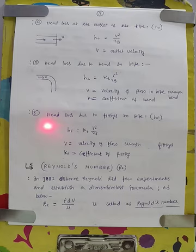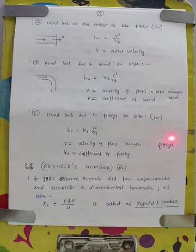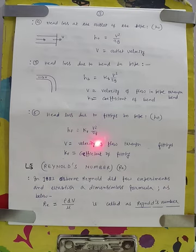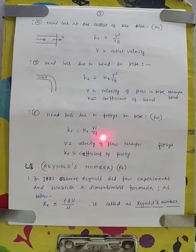Loss number six is head loss due to fitting in the pipe. It will be indicated by H subscript capital F — capital F because small f is used for the frictional head loss. So for fitting loss it is H subscript capital F. The loss due to fitting will be calculated as H_F = K_F × V² / 2g, where K_F is the coefficient of fitting and V is the velocity of flow through the pipe.